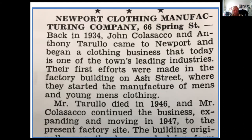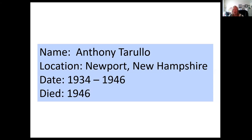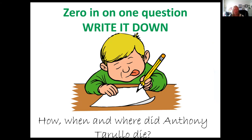I've been working on my husband's grandfather's life and found information about him in a book. I gleaned as much as I could from it — I saw that Anthony Tarullo was co-owner of a business with John Colosco, and the name of the business was Newport Clothing Manufacturing Company in Newport, New Hampshire. They were in business from 1934 until Mr. Tarullo's death in 1946. So I wrote down the information I discovered, and I realized I know when he died but not the exact date or location. So that became my quest.